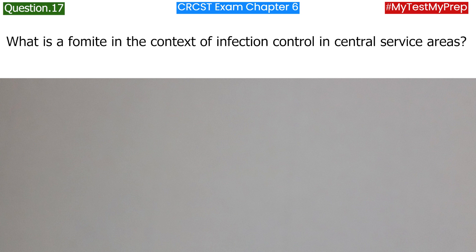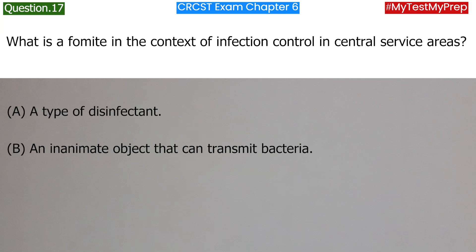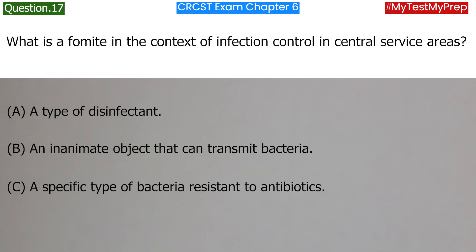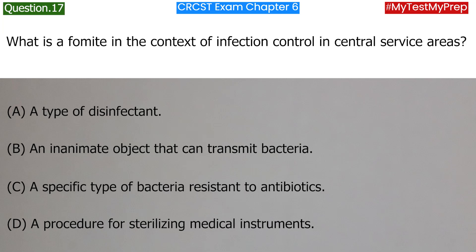What is a fomite in the context of infection control in central service areas? A. A type of disinfectant. B. An inanimate object that can transmit bacteria. C. A specific type of bacteria resistant to antibiotics. D. A procedure for sterilizing medical instruments. Answer: B. An inanimate object that can transmit bacteria.